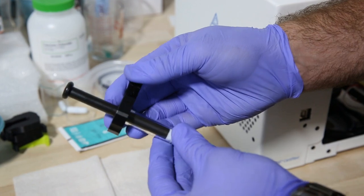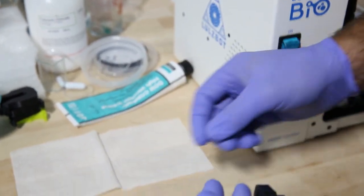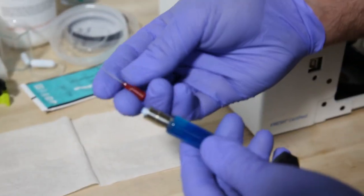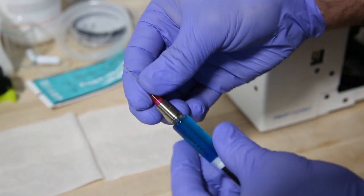So now this is ready to be loaded on the machine. We just need to add a dispensing needle. So this is the luer lock. You just tighten it into place.